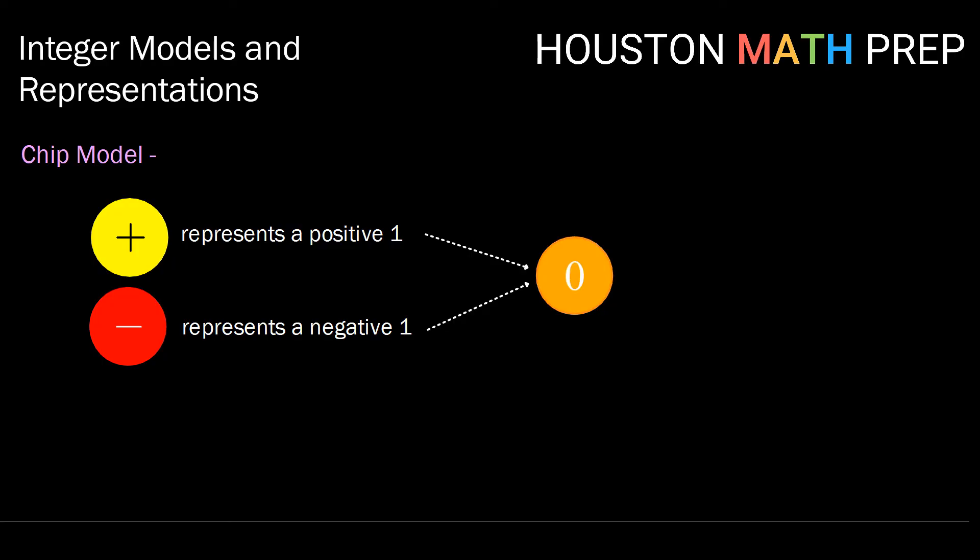What's important to note is that if we were to combine those two together, they add to 0. What we want to use here is the idea that a positive and negative opposite, so a positive 1 and a negative 1, bring us back to 0 or add to give 0.